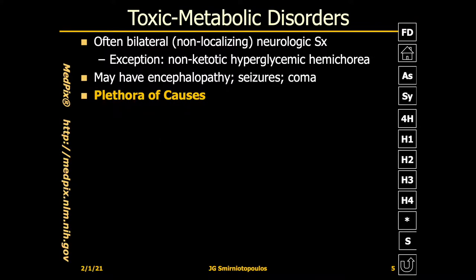Toxic and metabolic disorders are often bilateral and non-localizing, both in terms of imaging as well as neurologic signs and symptoms. One notable exception is non-ketotic hyperglycemic hemichorea, which as the name suggests is typically unilateral. Patients may have encephalopathy, seizures, and coma. There is a plethora of causes of toxic and metabolic disorders.